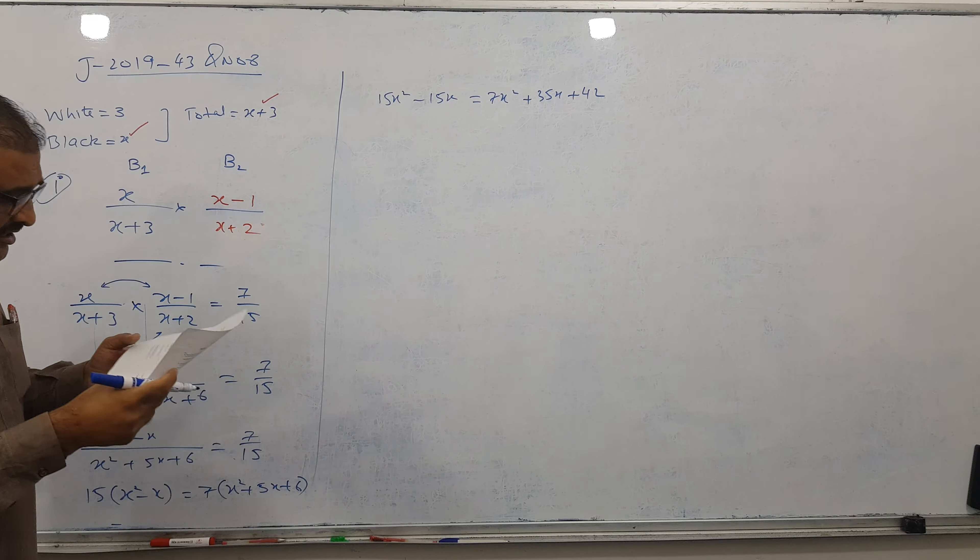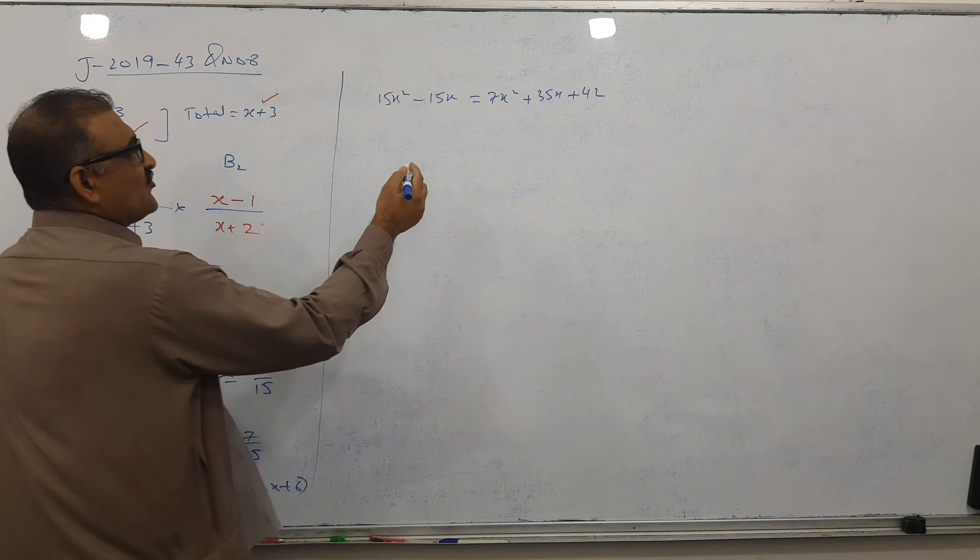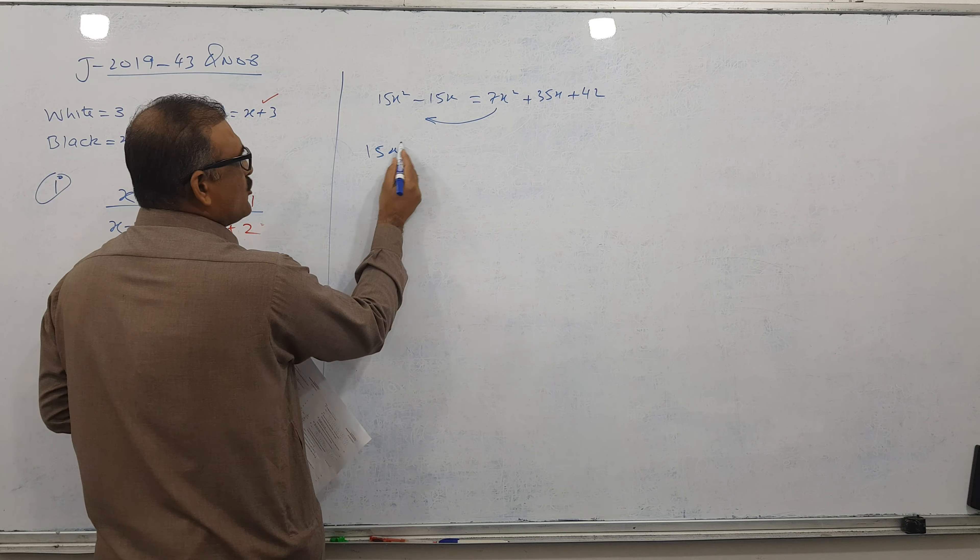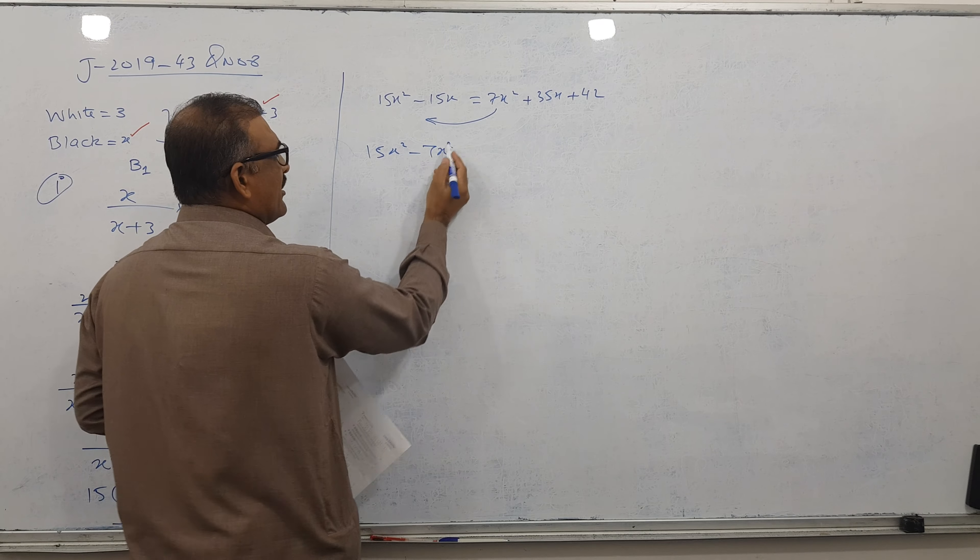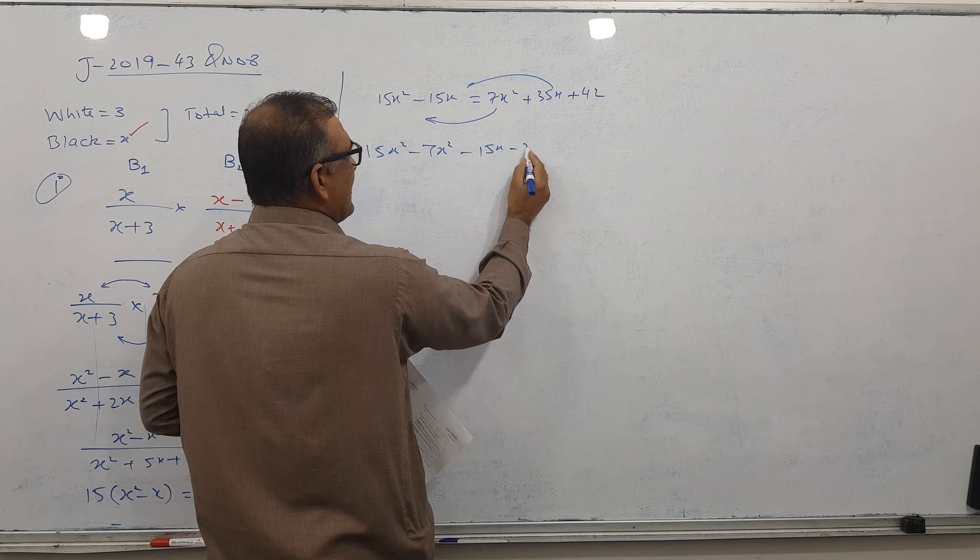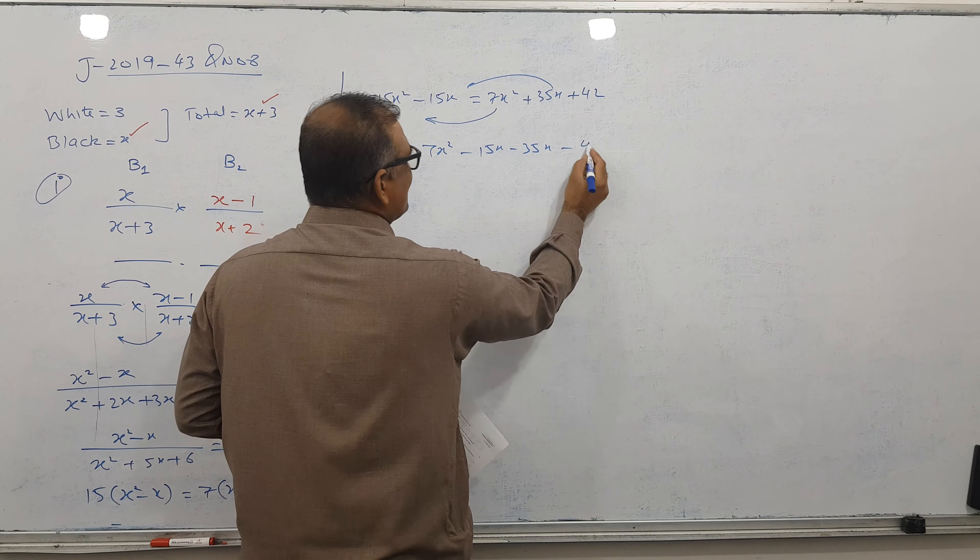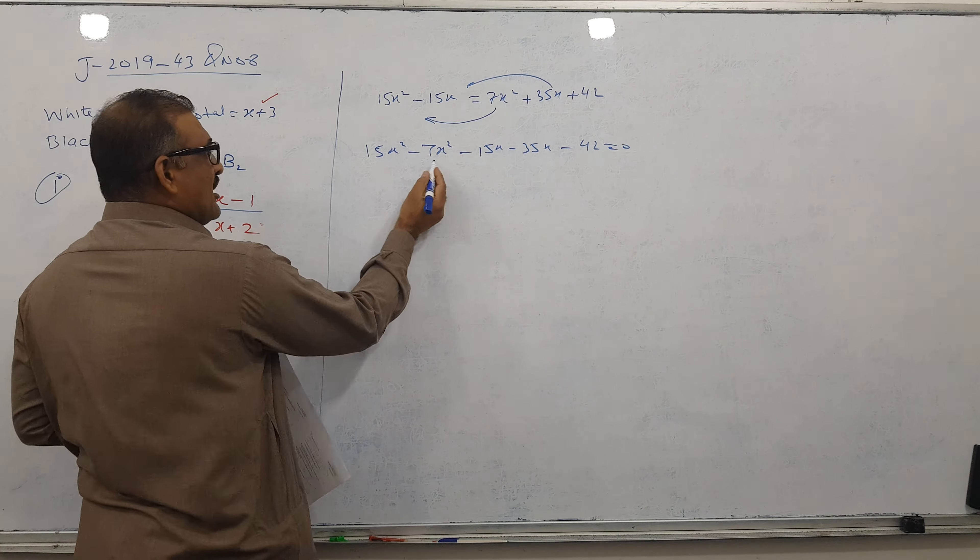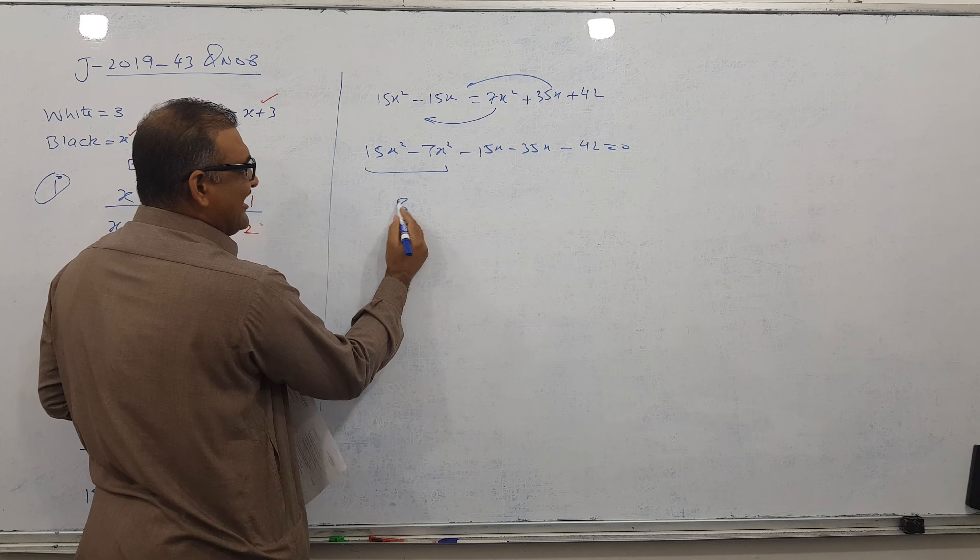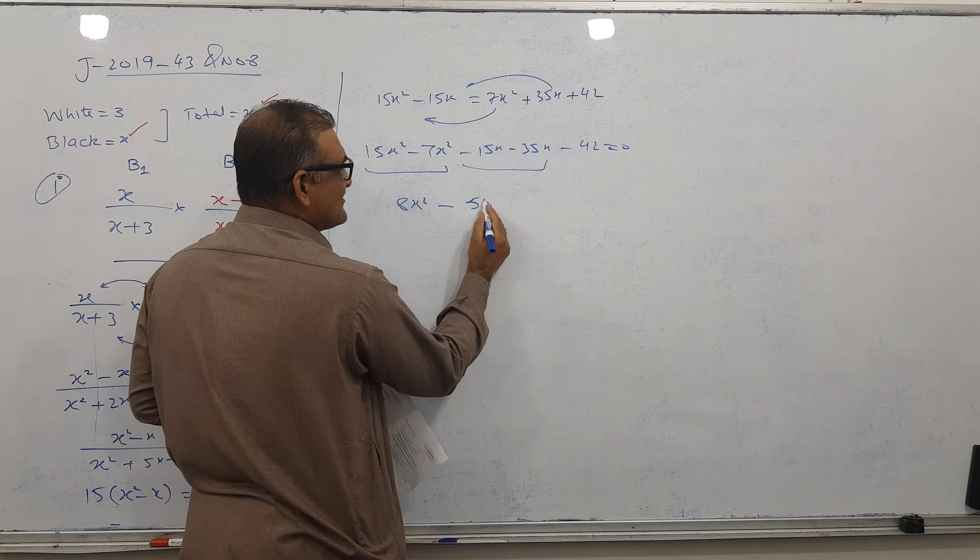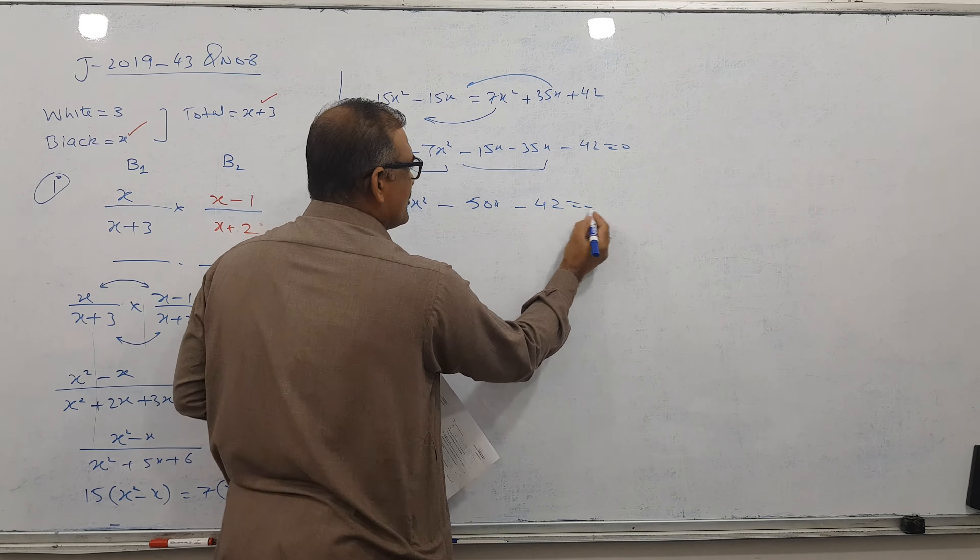Cross multiplying: 15 into this gives 15X squared minus 15X. And 7 into this gives 7X squared plus 35X plus 42.